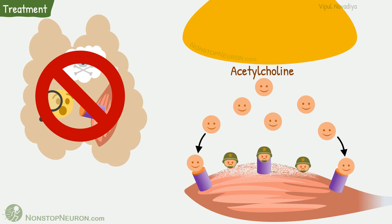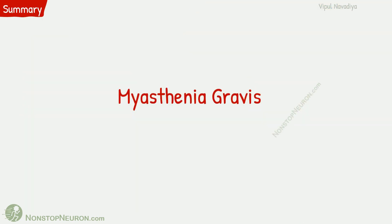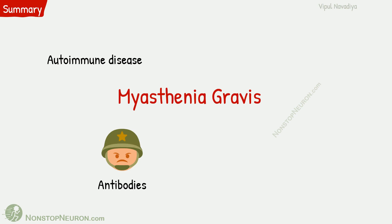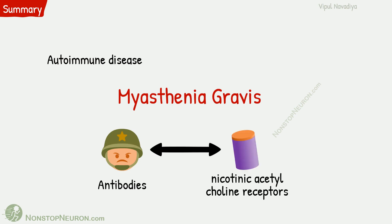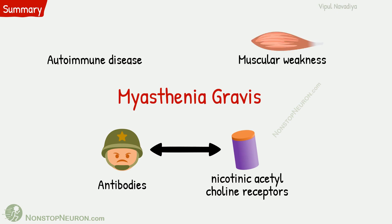So that was all the detail. In summary, myasthenia gravis is an autoimmune disease due to antibodies against acetylcholine receptors at the neuromuscular junction. They impair neuromuscular transmission and cause muscular weakness.